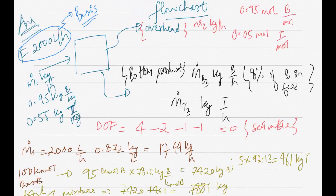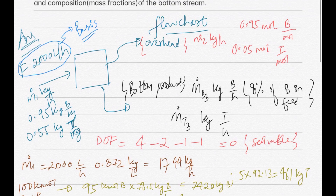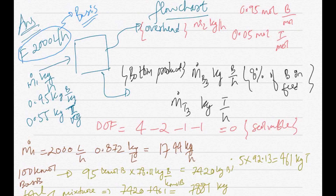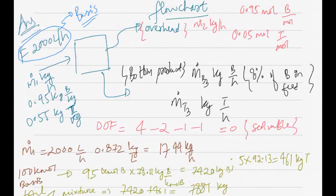The first and foremost thing is choosing the basis of the calculation. We generally choose the feed stream as the basis. If it is not mentioned, we assume some number and do the calculation with respect to that basis. The feed stream is 2,000 liters per hour — note: the question mistakenly states 200 liters per hour, but it is actually 2,000 liters per hour. We choose this as the basis and do the calculation accordingly. I drew the flowchart, which is basically a diagrammatic representation of the question.